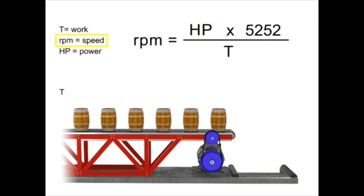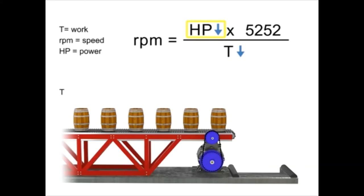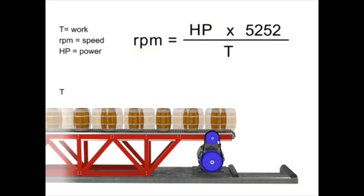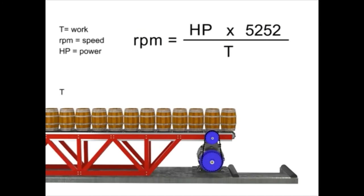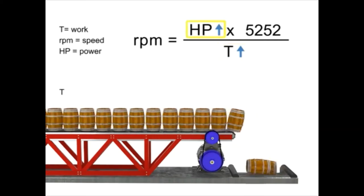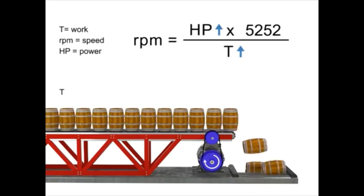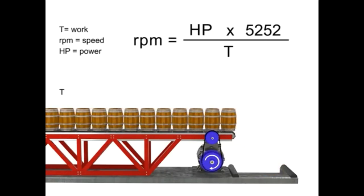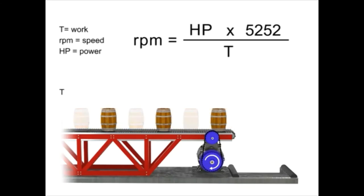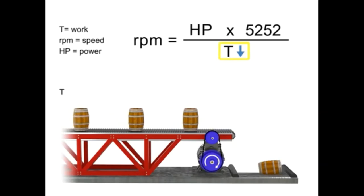If speed remains constant, then torque and horsepower are proportional. As the torque increases, horsepower also increases to maintain constant RPM. Let's say we want production to increase but the speed of the conveyor to remain constant. If torque increases, horsepower also increases to compensate. This means a more powerful motor is needed to produce more torque at the same speed. Similarly, if we wish speed to remain constant and decrease torque, then horsepower also decreases.